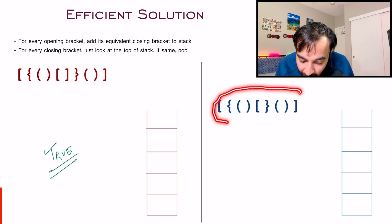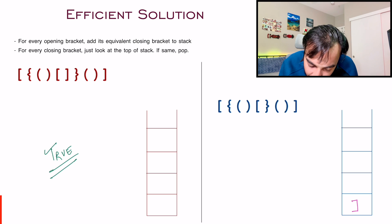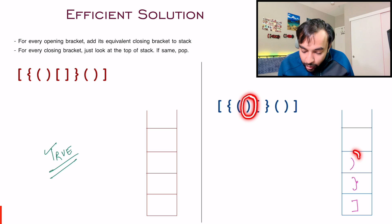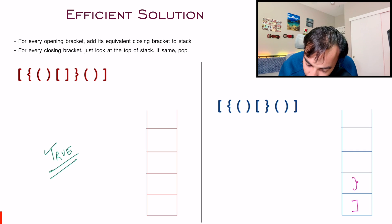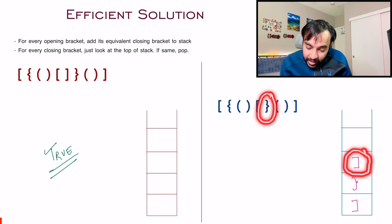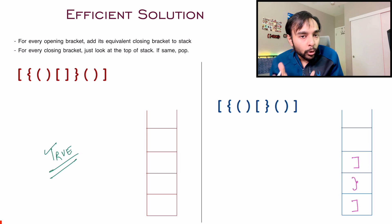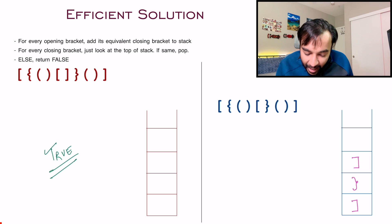Let us look at one example where the parentheses are not valid. You have an opening bracket, so add a closing bracket to the stack. The next is an opening curly brace, so add a closing curly brace. The next is a normal parentheses, so add a closing parentheses. Move ahead — you see a closing parentheses, and your stack also has one, so remove it. You get an opening square bracket, so add a closing square bracket. Now you see a closing curly bracket, but if you check your stack, you have a closing square bracket — these two are not the same. That tells you one of the brackets did not close or open properly, so as soon as these two elements do not match, stop and return false.